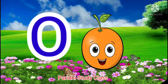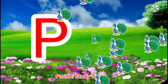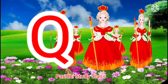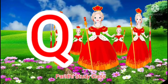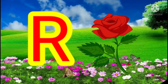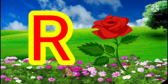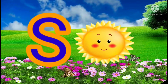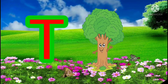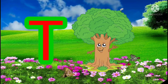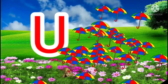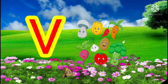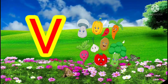O for orange, P for potato, Q for queen, R for rose, S for sun, T for tree, U for umbrella, V for vegetable.